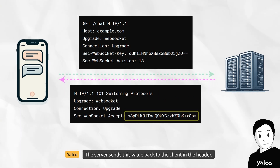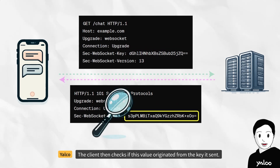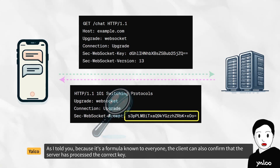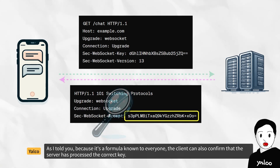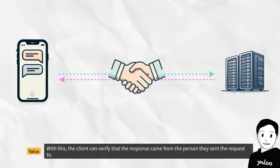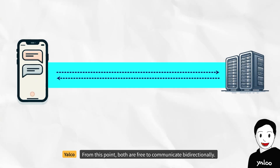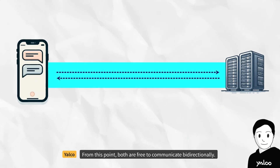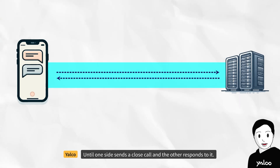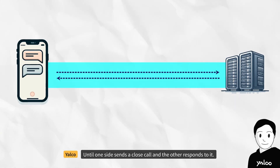The server sends this value back to the client in the header. The client then checks if this value originated from the key it sent. Because it's a formula known to everyone, the client can also confirm that the server has processed the correct key. With this, the client can verify that the response came from the person they sent the request to. From this point, both are free to communicate bi-directionally, until one side sends a close call and the other responds to it.